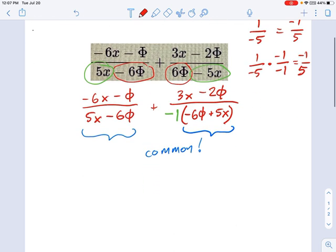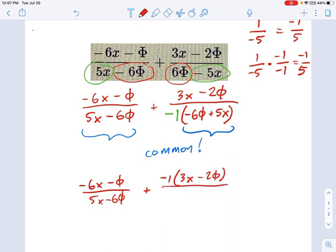So let's take that negative sign and move it up top. This will give me negative 6x minus phi over 5x minus 6 phi, the original unblemished fraction from the left. And now I'm going to add negative 1 times 3x minus 2 phi. I moved that negative 1 up top. And now what I have on bottom is the exact same denominator. So now you can really just combine these things.